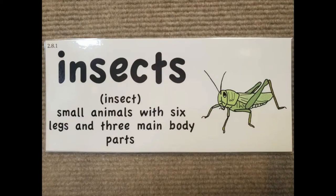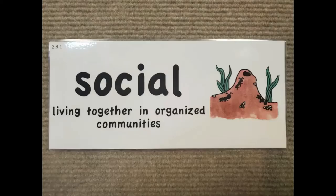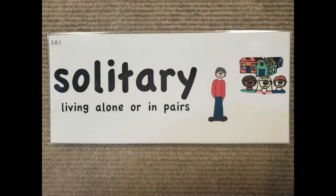Another word that we will hear is insect. An insect is a small animal with six legs and three main body parts. When we use the word social scientifically, we're talking about creatures or animals that live together in organized communities. Honey bees are a social insect because they all work together to keep the hive running. Solitary, scientifically, means any animal that lives alone or in pairs. Most flies are solitary insects.